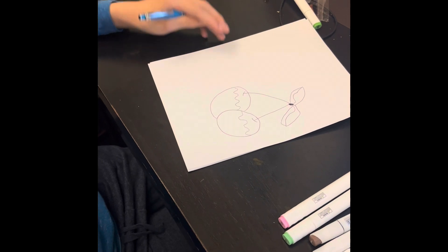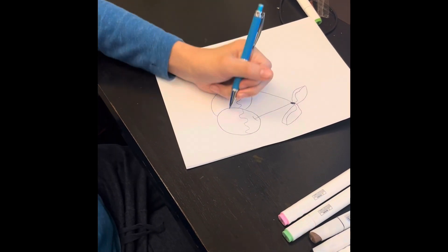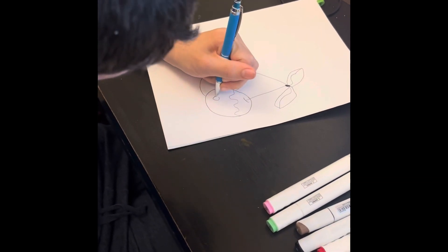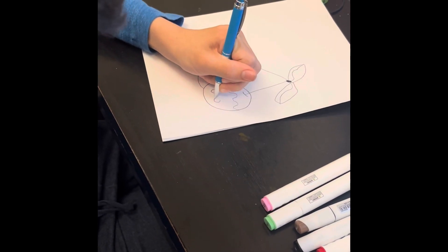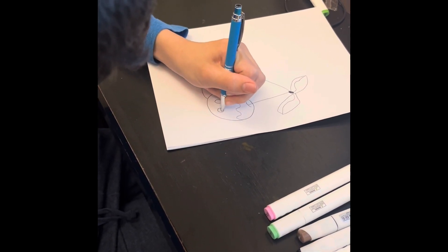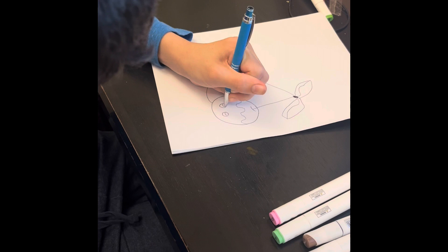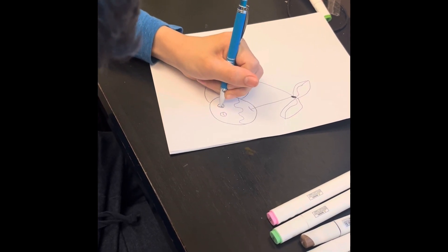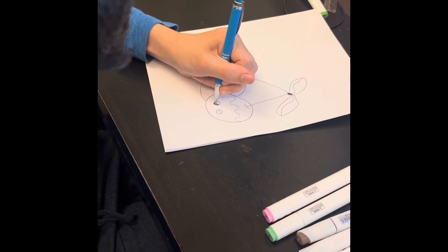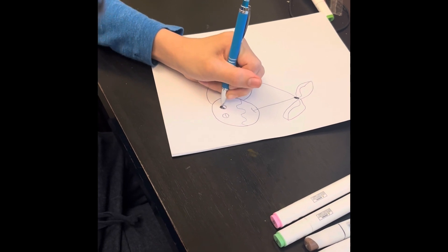Then, we draw the leaves. Now, you just need a face. Eyeballs, and stuff like that.